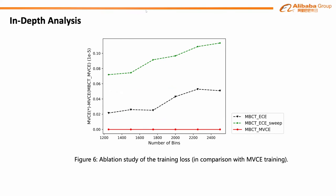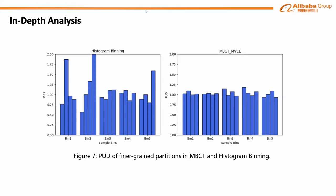We also analyze the effect of training losses, comparing our MVCE loss with traditional ECE and ECE sweep losses in Figure 6. Using MVCE as the training loss consistently outperforms ECE and ECE sweep on all three datasets, showing it's beneficial to consider average PCEs from different perspectives during training. We further analyze whether MBCT puts samples with similar bias patterns into the same bin by randomly selecting five bins of MBCT and histogram binning, dividing each bin into four subgroups. Figure 7 shows the PUD of these subgroups — MBCT's subgroups are closer to one, implying MBCT learns better relationships between samples and the bias pattern of F than naive binning methods.